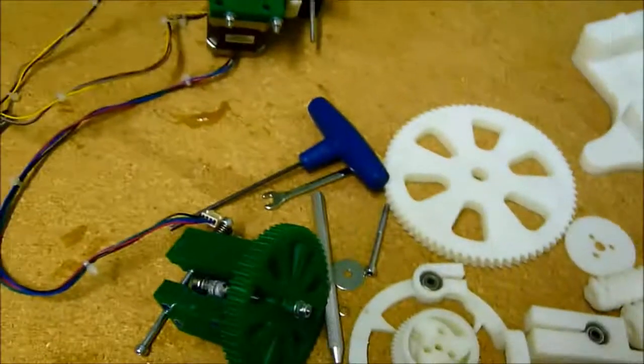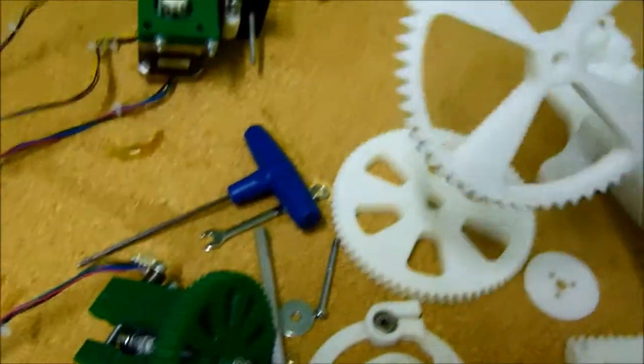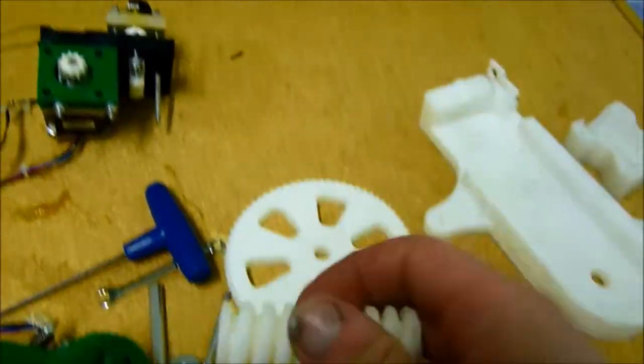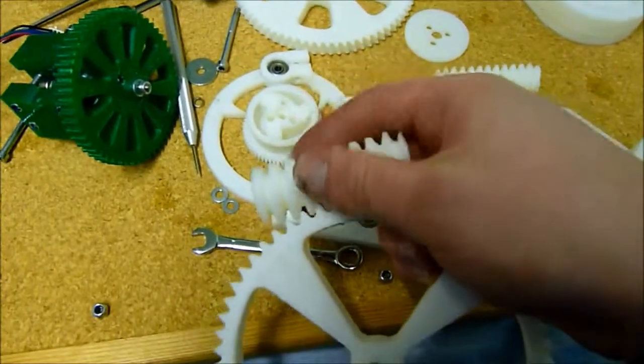This has got to go around at one RPM, and that drives the first set of worms which are at 60 to 1, and that drives the second worm.